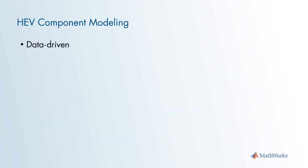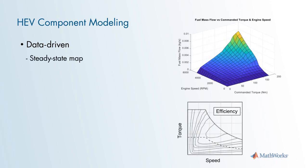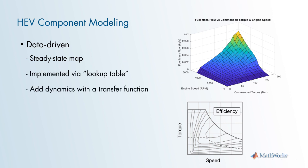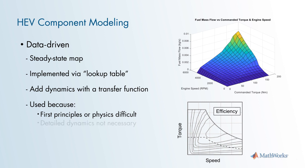The next type of model is a data-driven model — a steady state or static map implemented in Simulink using a lookup table. You can also add dynamics using a transfer function. This method is used because first principles may be difficult to derive, detailed dynamics are not necessary, or you need a fast-simulating model such as in a hardware-in-the-loop simulation environment.